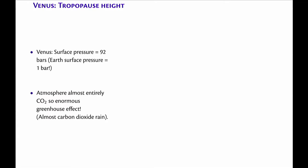So the greenhouse effect — there's so much greenhouse that if Venus were a little bit colder, it would actually condense and rain carbon dioxide. Because the pressure would exceed the saturation vapor pressure of carbon dioxide. The reason we don't get carbon dioxide rain on Venus is actually because it's so warm, because there's so much carbon dioxide.